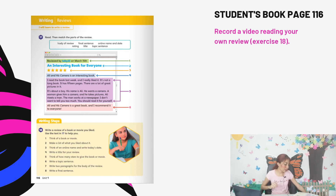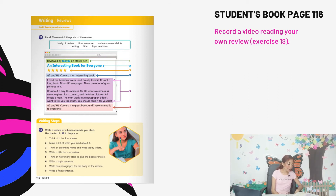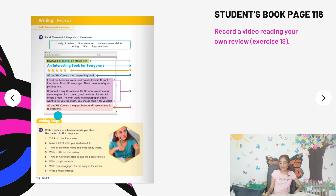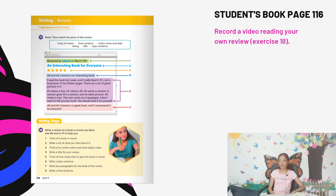The body paragraph says: 'I read a book last week and I really liked it. It's not a long book — it has 15 pages. There are a lot of great pictures in it. It's about a boy named Ali who wants a camera. A woman gives him a camera and he takes pictures. Ali meets a man who works at a newspaper. I don't want to tell you much — you should read it for yourself.' And the final sentence says: 'Ali and His Camera is a great book and I recommend it to everyone.'